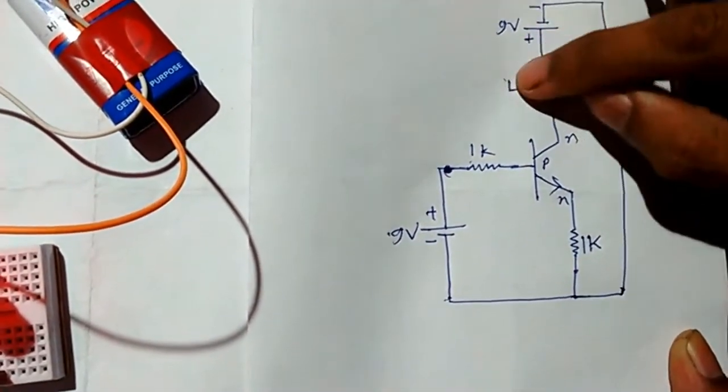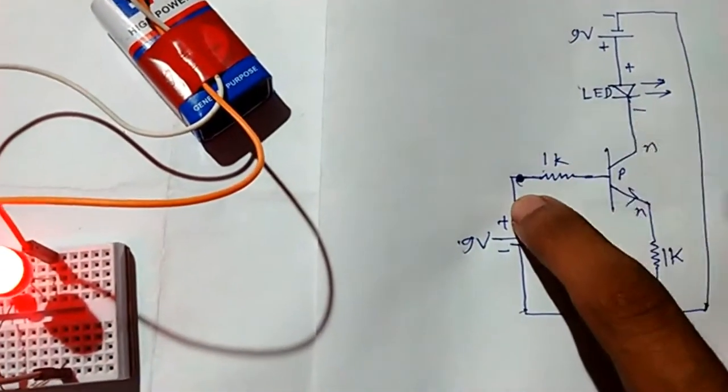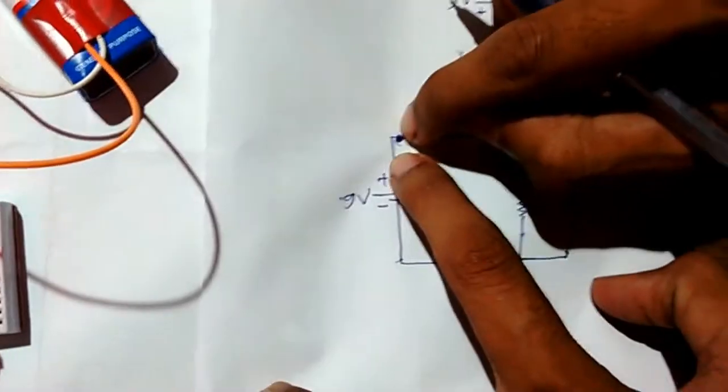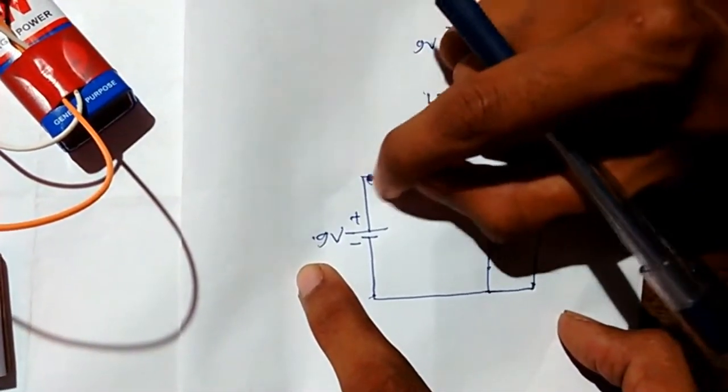And this LED will turn on. This shows that the transistor acts as a switch. That means when there is positive voltage on the base terminal, then the transistor will turn on.